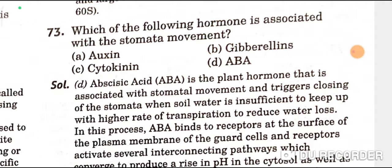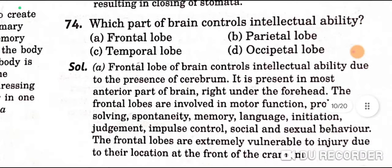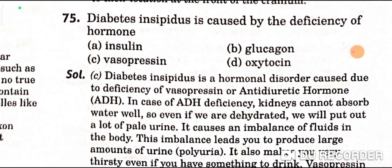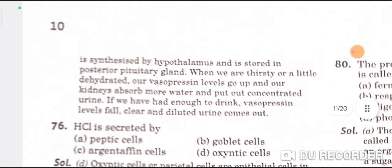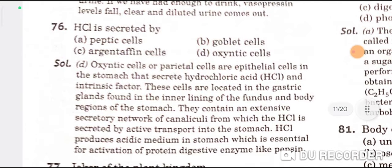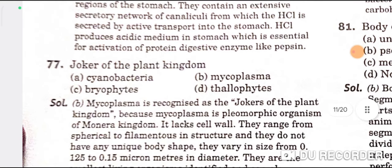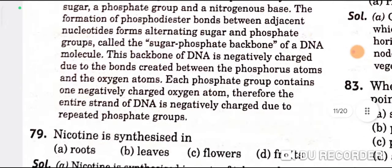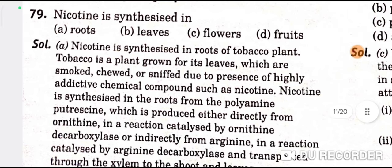Which part of the brain controls intellectual ability? The frontal lobe — A is the correct option. Diabetes insipidus is caused by deficiency of vasopressin — C is the correct option. HCl is secreted by oxyntic cells. The joker of the plant kingdom is mycoplasma — B is the correct option. DNA fragments are negatively charged — B is the correct option. Nicotine is synthesized in roots — A is the correct option.